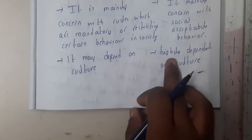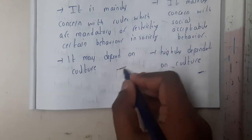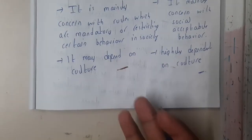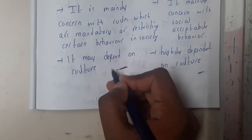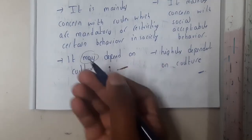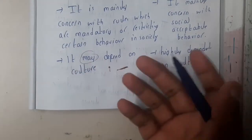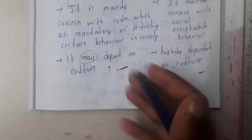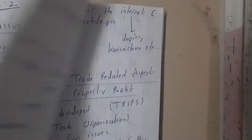Ethics is mainly concerned with the acceptance of behavior by society. Laws may depend on culture to some extent, but they are not entirely culture-dependent. Ethics, on the other hand, is heavily influenced by society and culture, as it is the society that decides what is acceptable or not.